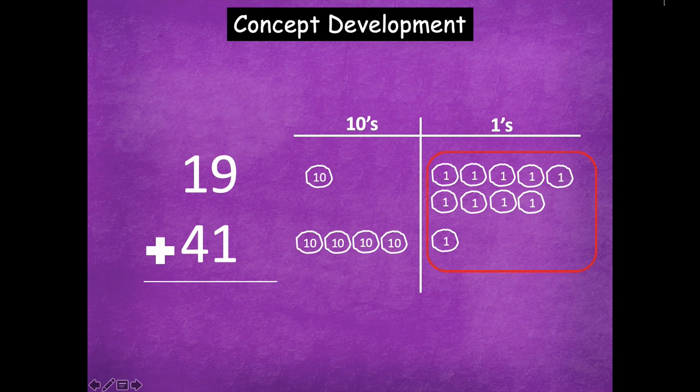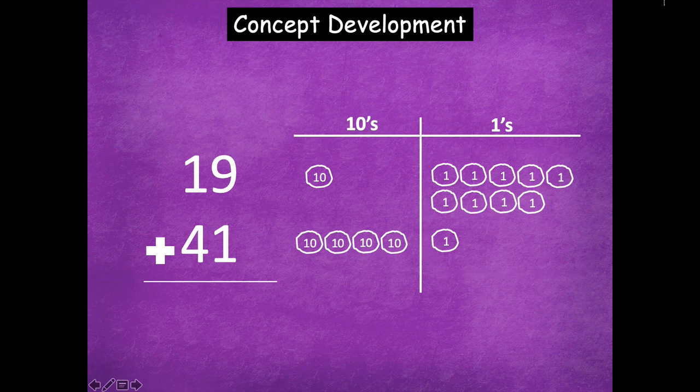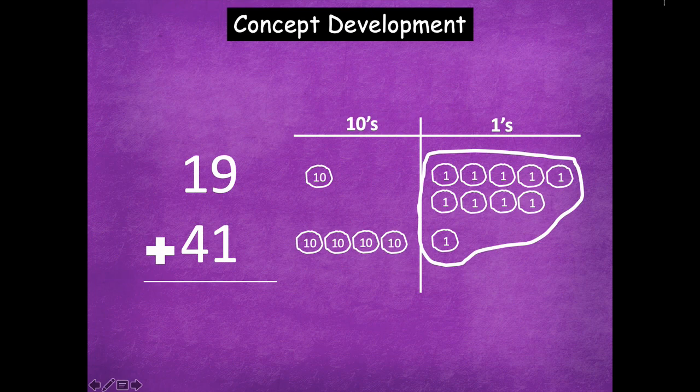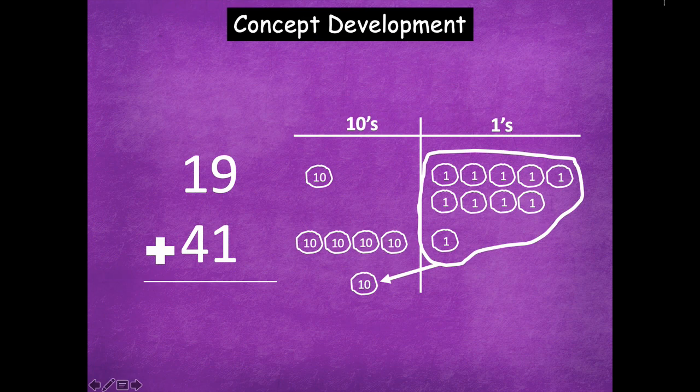Okay, now we're going to add our ones first. So we have nine ones plus one one. Oh, that makes a 10, right? So I'm going to draw and group those together and I'm going to draw an arrow to say they're going over to the tens to make a 10. Okay, so similarly before we would remove all of those place value disks. Here we're just going to circle them and draw a line to make the new 10. So now I won't count anything that's in the circle as a one anymore in my drawing.